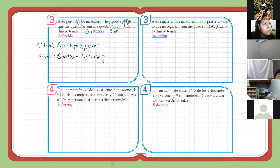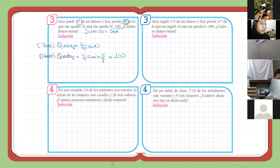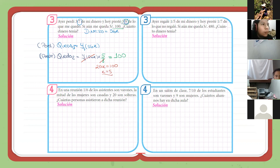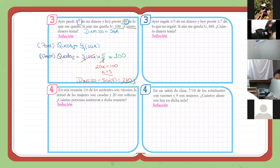Dice que si aún me quedan cien soles. Después de haber perdido y prestado, igualamos esto a cien. Séptima y octava: 56. Me quedaría 20K igual a cien. De acá, K igual a cinco. Pero esta no es mi respuesta. Mi respuesta dice ¿cuánto dinero tenía? El dinero que tenía será 56 por 5, que me debería dar 280. Y listo.